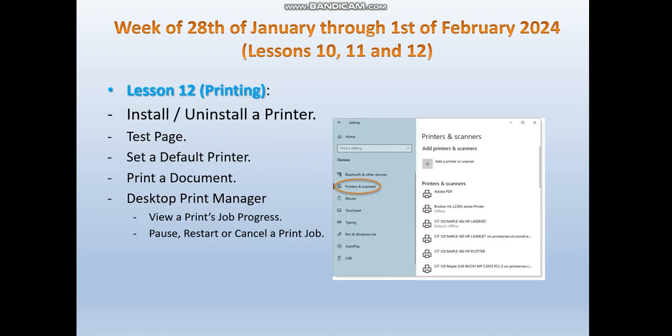The last lesson during week 4 is lesson 12, about printing. We will learn how to install and uninstall a printer using the proper settings in Windows 10, how to test a printer through a test page, and how to set a default printer when several printers are installed. We will also cover the various options for printing a document and how to use the print manager to view print job progress and to pause, restart, or cancel a print job.